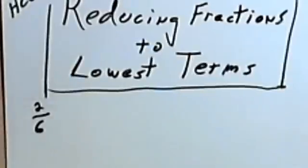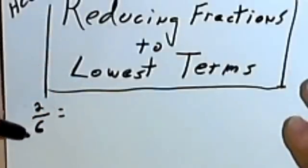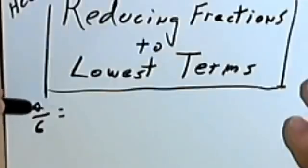So let's start with this example. We have the fraction 2 sixths, or 2 over 6, and we want to reduce it. We begin by looking at the numerator and denominator and see if there's something we can divide evenly into both of them.